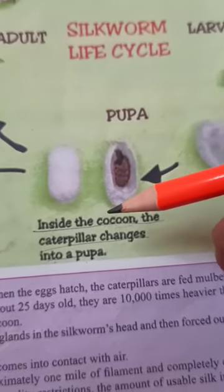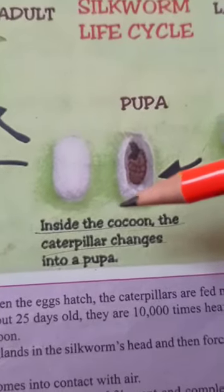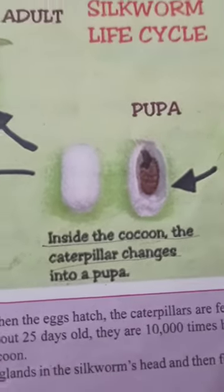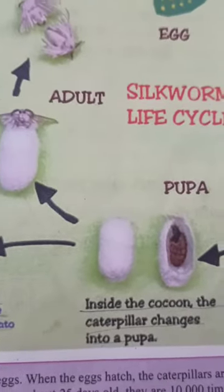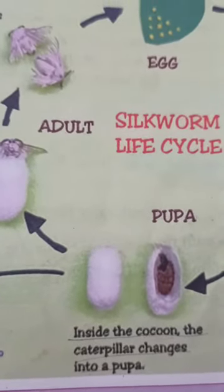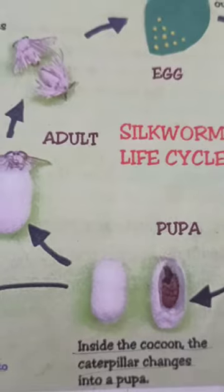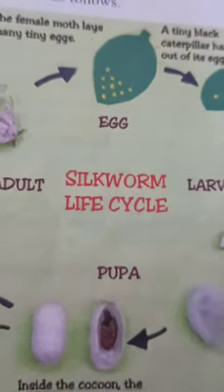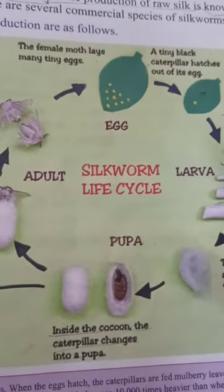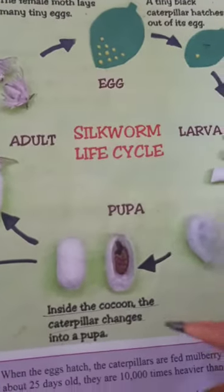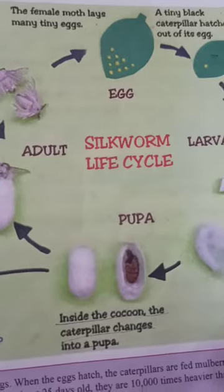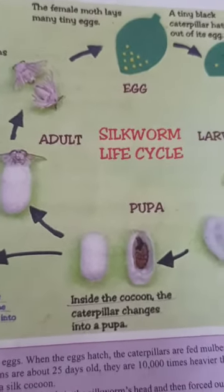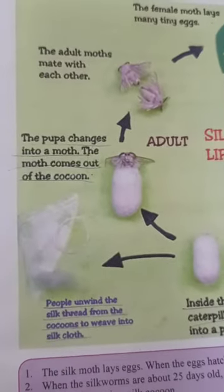In this way, silkworms complete their life cycle and at the same time provide us a valuable fiber which we use to make cloth — expensive clothes such as suits, sarees, and many other valuable items which can be made from silk.